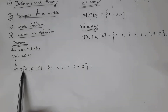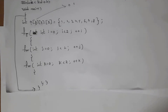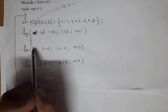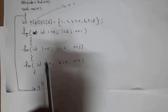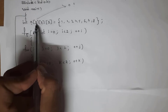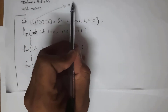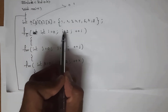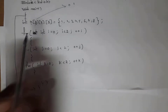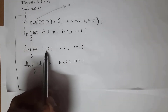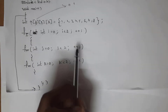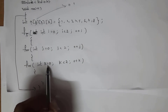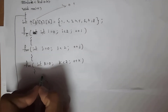I want to print the output along with index numbers, so I took three for loops. The first for loop is for the first dimension, the second for loop is for the second dimension, and the third for loop is for the third dimension. Each dimension has size two, so elements are at index zero and one. I written: for(int i=0; i<2; i++), for(int j=0; j<2; j++), and for(int k=0; k<2; k++).